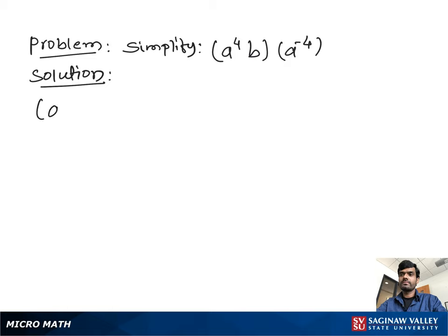Simplify a to the power 4b into a to the power negative 4. Writing the a terms together and the b term together: a to the power 4 into a to the power negative 4, and b.